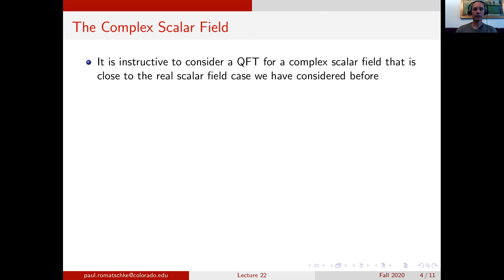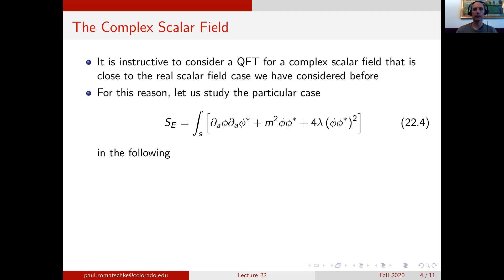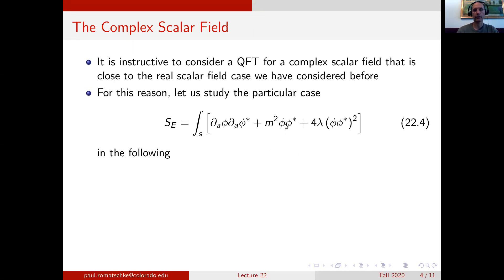Since it is instructive to consider a situation where the action for the complex scalar field is close to that of the real scalar field, we consider an action of the following form. It has a mass term that comes with the quadratic field phi phi star, and it has a phi-four term in the action that we write in terms of the complex scalar field as phi phi star squared.